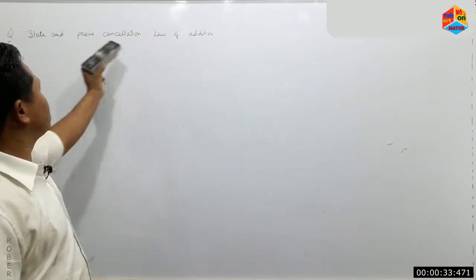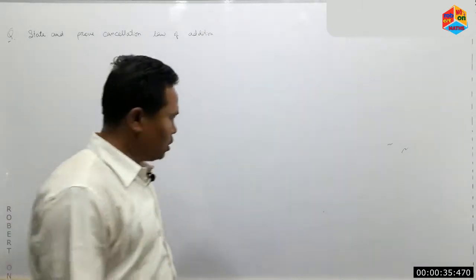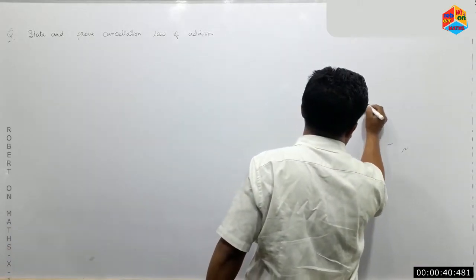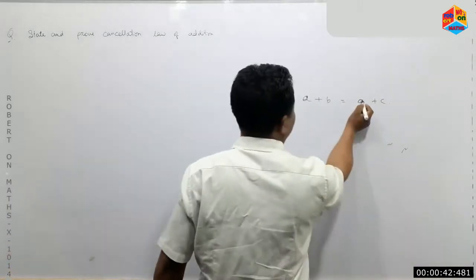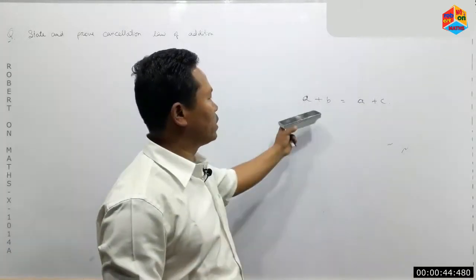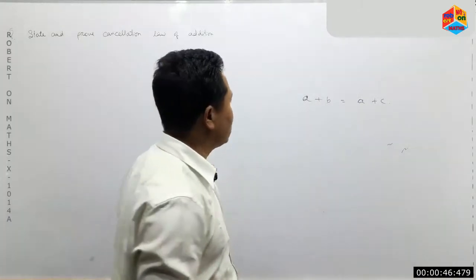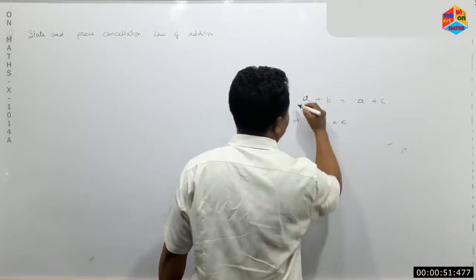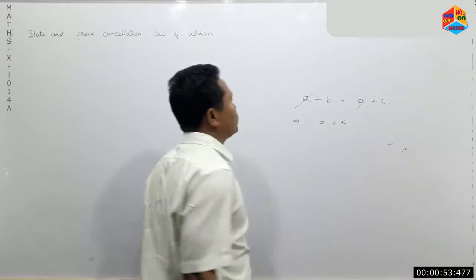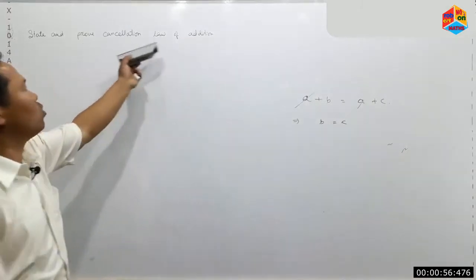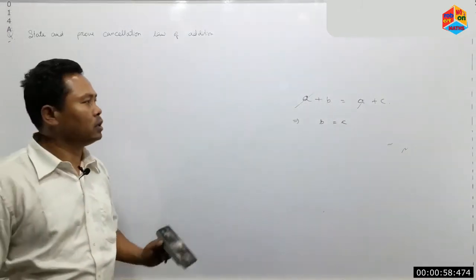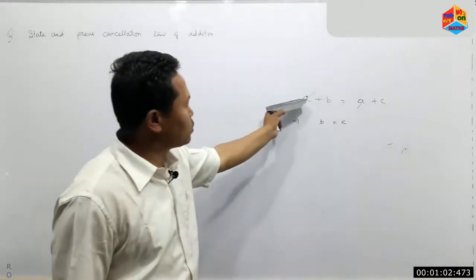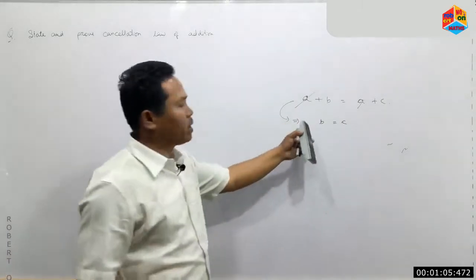The cancellation law of addition states that a plus b equal to a plus c is not the same as simply saying b equals c without proof. We need to prove this properly. The proof is called the cancellation law of addition.